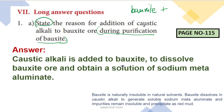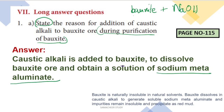Caustic alkali is a base. It is called NaOH — sodium hydroxide. Caustic alkali is added to bauxite to dissolve the bauxite ore and obtain a solution of sodium meta-aluminate. This is the reason.